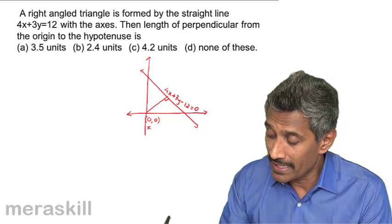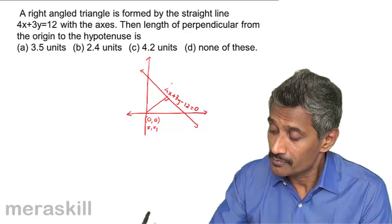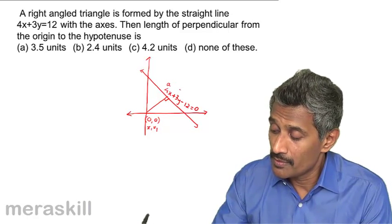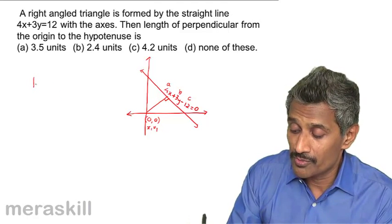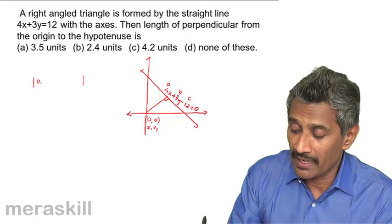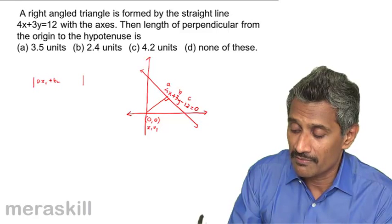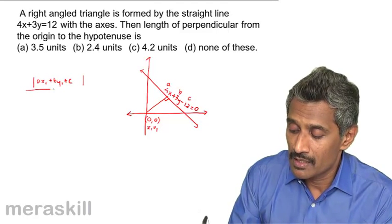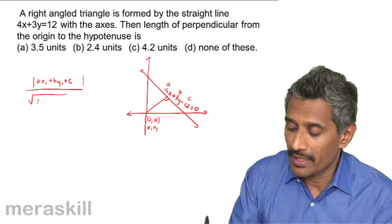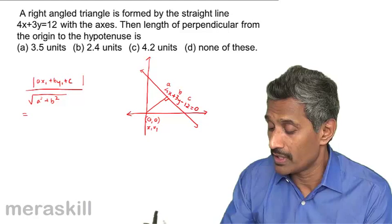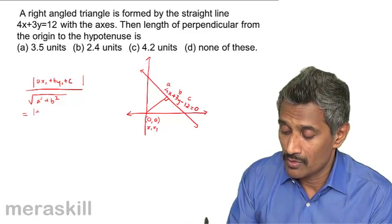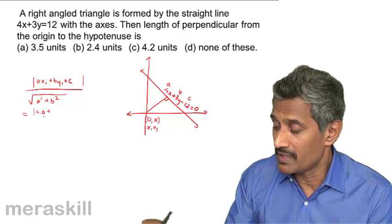The distance is the absolute value of (ax1 plus by1 plus c) upon square root of (a squared plus b squared). So ax1 is 4 into 0, plus by1 which is 3 into 0, plus c which is minus 12, upon square root of a squared plus b squared.